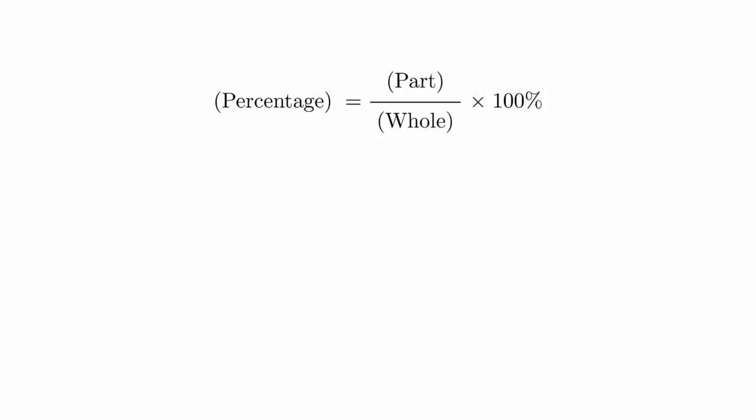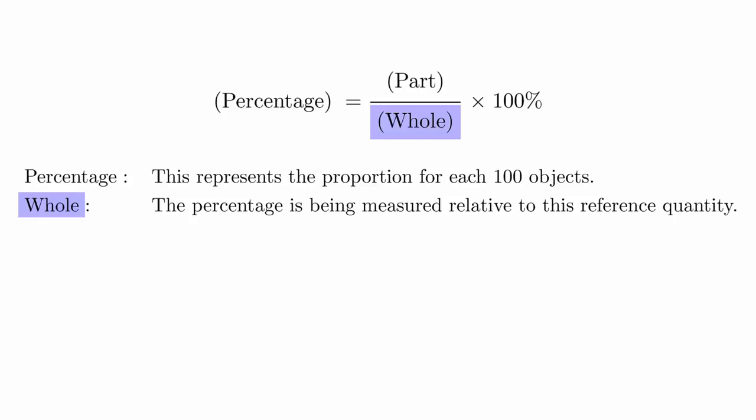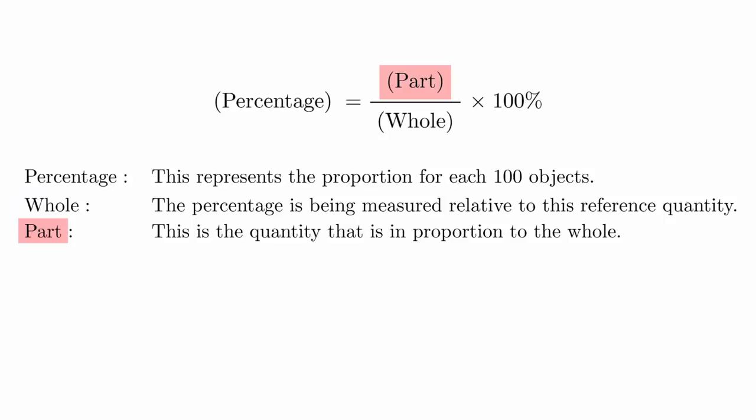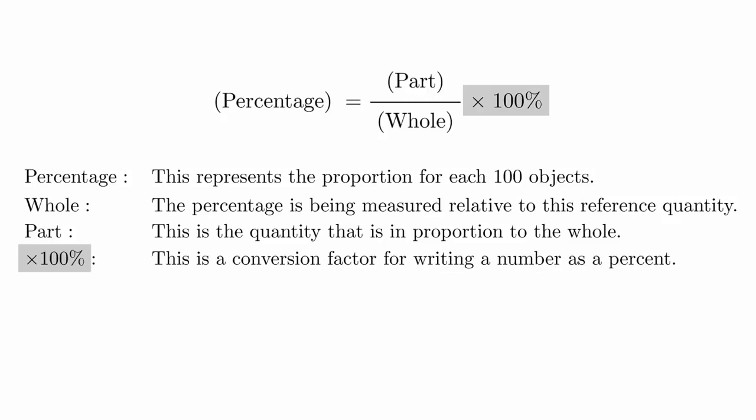To use this formula, we need to understand what each word represents. The percentage is the number that represents the proportion for each 100 objects. The whole is the reference quantity, and the percentage is being measured relative to this amount. The part represents the quantity in proportion to the whole. The multiplication by 100% is a conversion factor for converting a number into a percent.